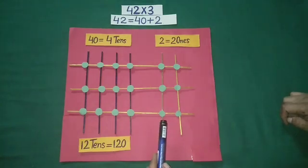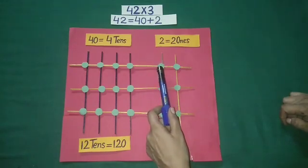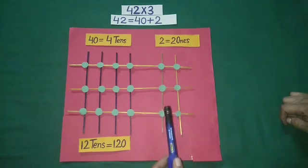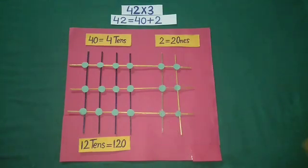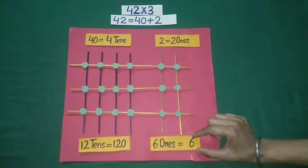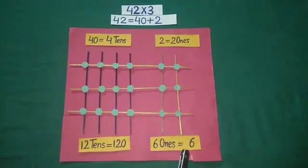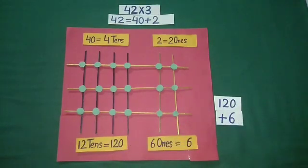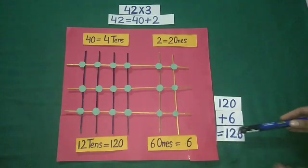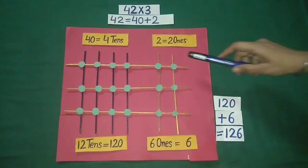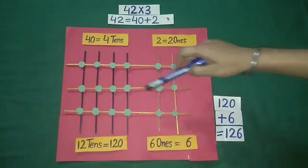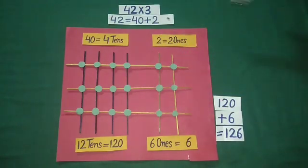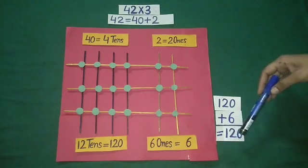Each intersection point of yellow sticks represents 1. So we have 1, 2, 3, 4, 5, 6 ones. 6 ones is equal to 6. Now we add 120 and 6. Adding 120 and 6, we get 126. By using sticks and counting their intersection points, we have multiplied 42 with 3, and our answer is 126.